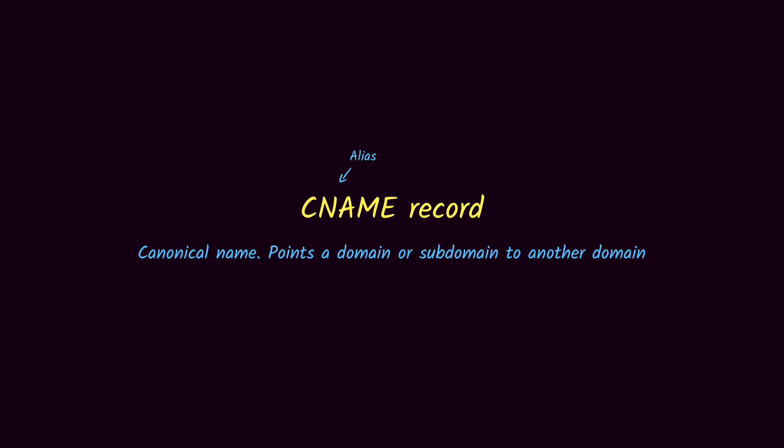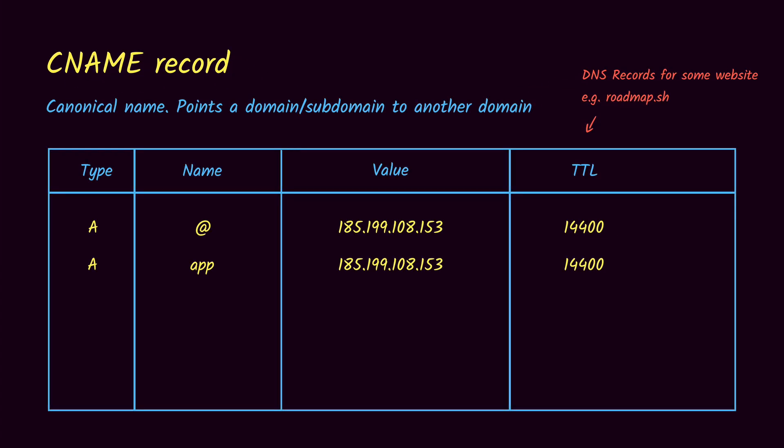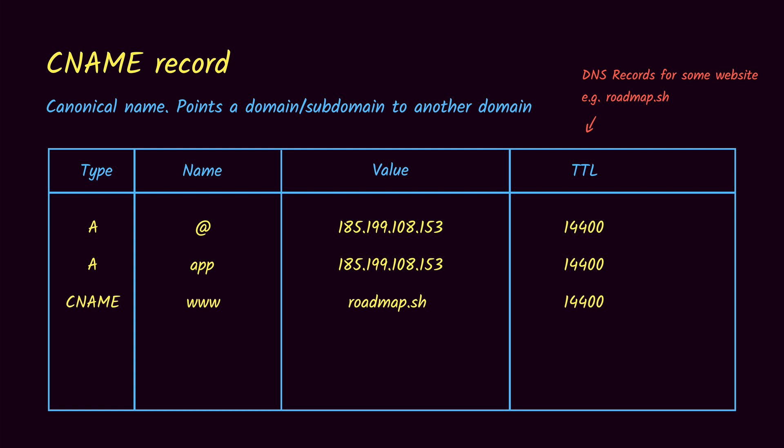The next one is the CNAME record, which stands for the canonical name record. It is an alias record which allows us to point a domain or subdomain to some external domain or to one of the current domains. For example, with roadmap.sh we are handling roadmap.sh and app.roadmap.sh, but not www.roadmap.sh. To handle that we can either add another A record with www pointing to the IP address, or we can add a CNAME record — so whenever the user opens www.roadmap.sh it will find the canonical name, which is roadmap.sh, and return the IP address for that.